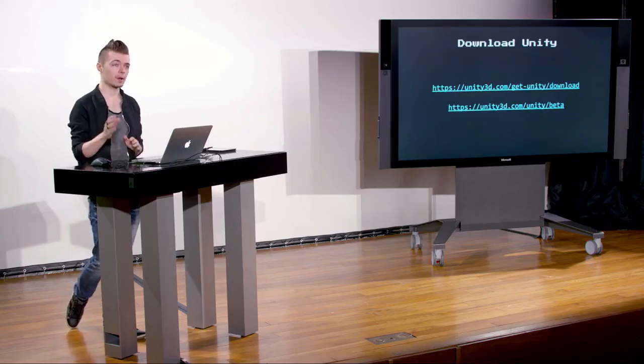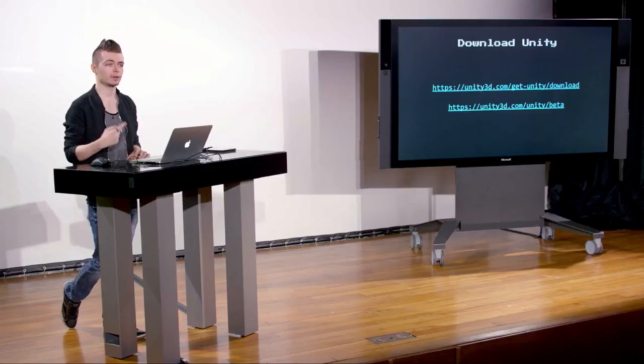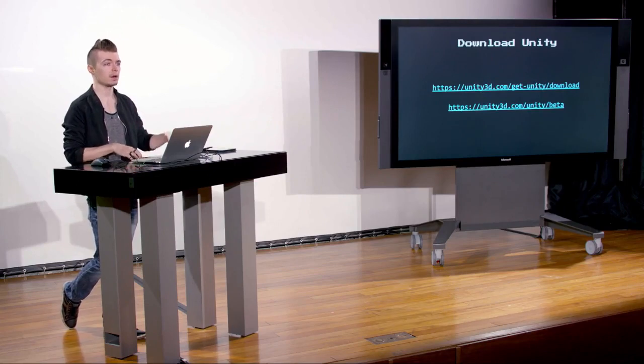If you haven't downloaded Unity already, there are two links. The top link is the catch-all download link and the second is the beta link. We're using the beta in this course because Unity has started transitioning away from a numerical system for releases and is now going yearly. The last long-term release candidate was 2017's version, and the newest beta is the 2018 version with a bunch of new features. Everything runs very well on Windows and Mac with the new beta.